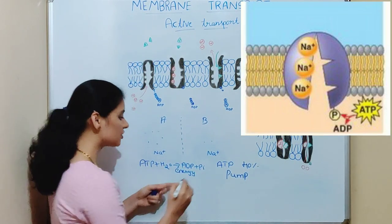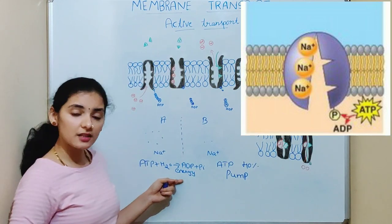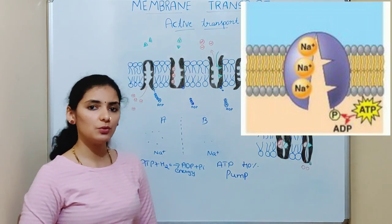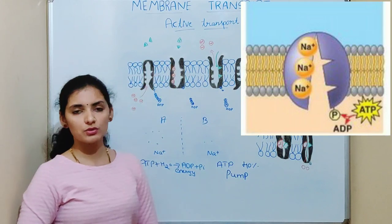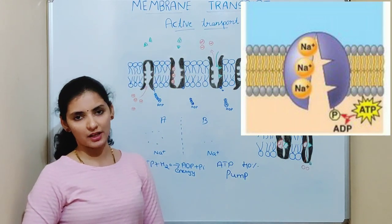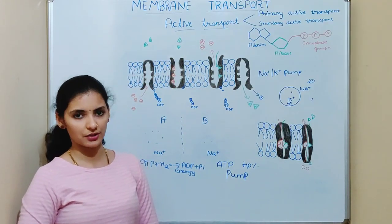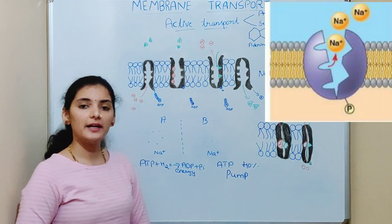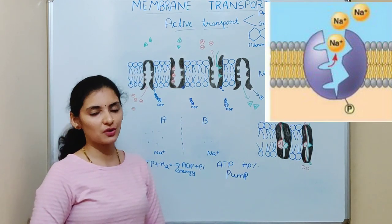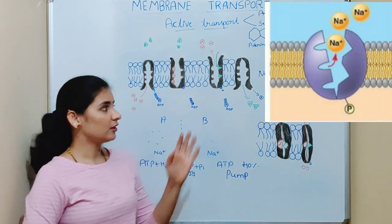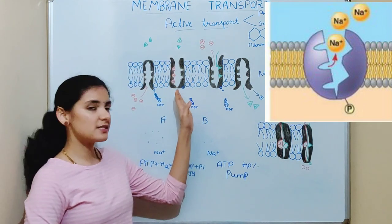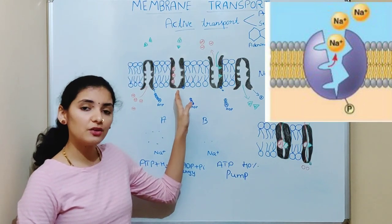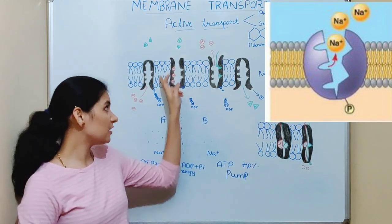The energy released during ATP hydrolysis is used for the movement of sodium and potassium ions. This phosphate goes and binds to the pump — a process called phosphorylation — and the pump is now said to be phosphorylated.